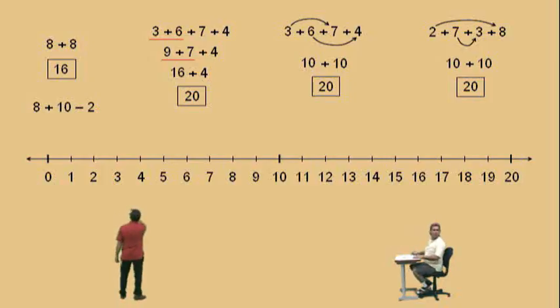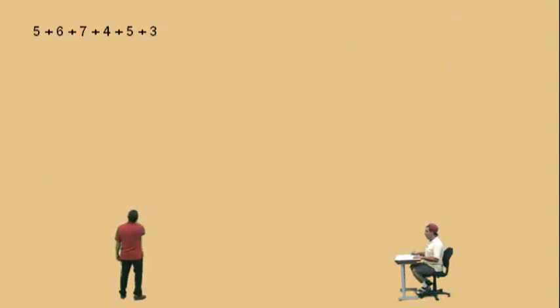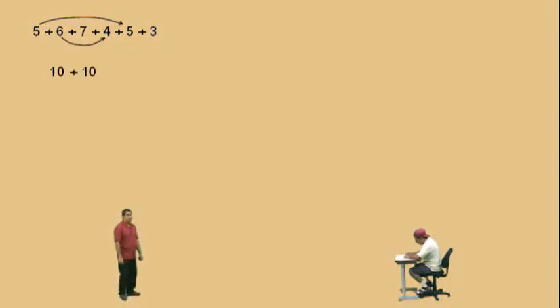Now, here's a little bit longer problem, Charlie. Now, don't get scared. 5 plus 6 plus 7 plus 4 plus 5 plus 3. Now, remember, we're going to add in any order we want, because they're all being added together. So, give me two numbers, Charlie. 5 and the 5. 5 and the 5, well, those add to 10. What else? 6 and the 4. 6 and the 4, well, those add to 10. And the 7 and 3. And the 3 add to 10. Very nice there, Charlie. And 10 plus 10 plus 10 is 30. Very nice.